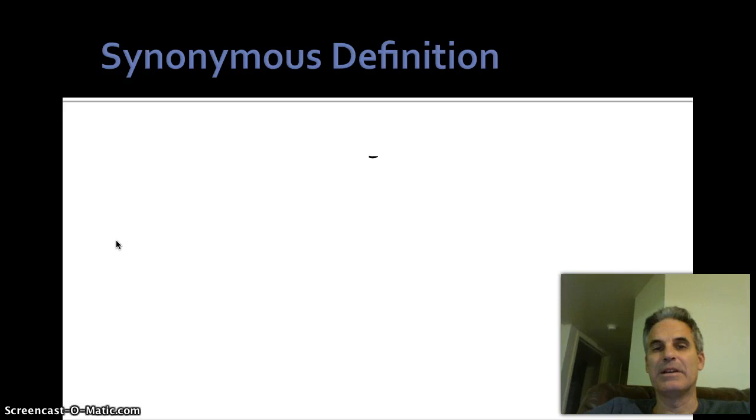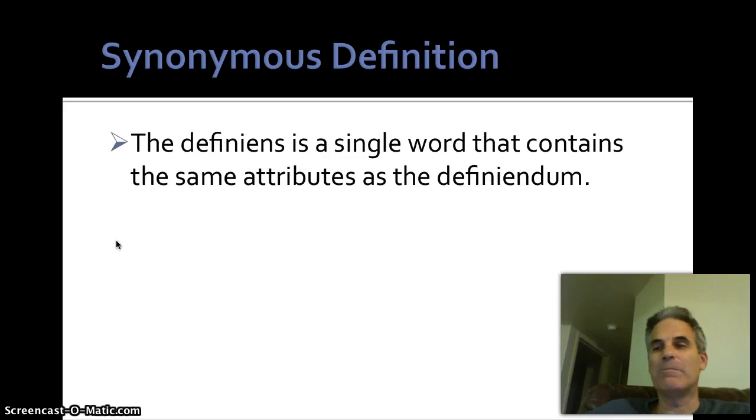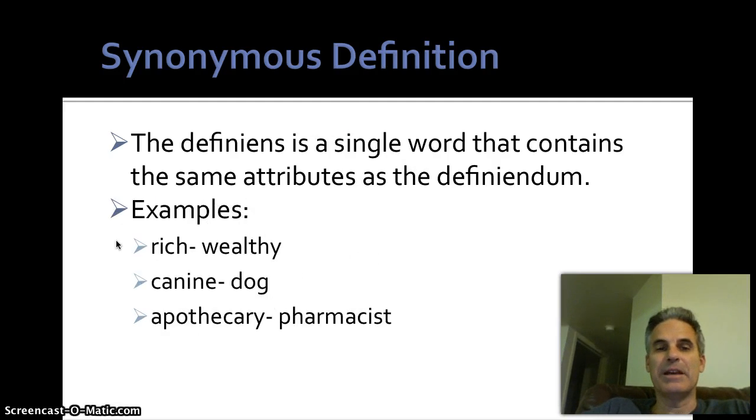Synonymous. A synonym is a word that means the same as another word. Here, the definiennes is a single word that contains the same attributes as the definiendum. Basically, we're defining one word with another. So, example, rich means wealthy. Canine, dog. Apothecary, pharmacist. We're defining one word with one word only. Alright, synonymous.